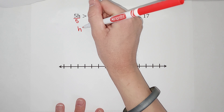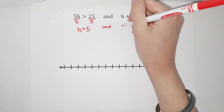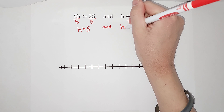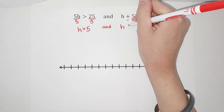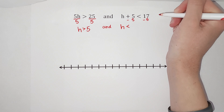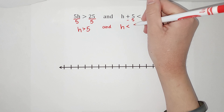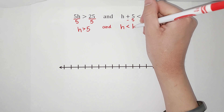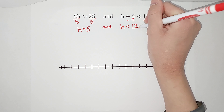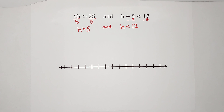And we've got h plus 5 is less than 17, so I'm going to subtract 5 from both sides and get h is less than 12.